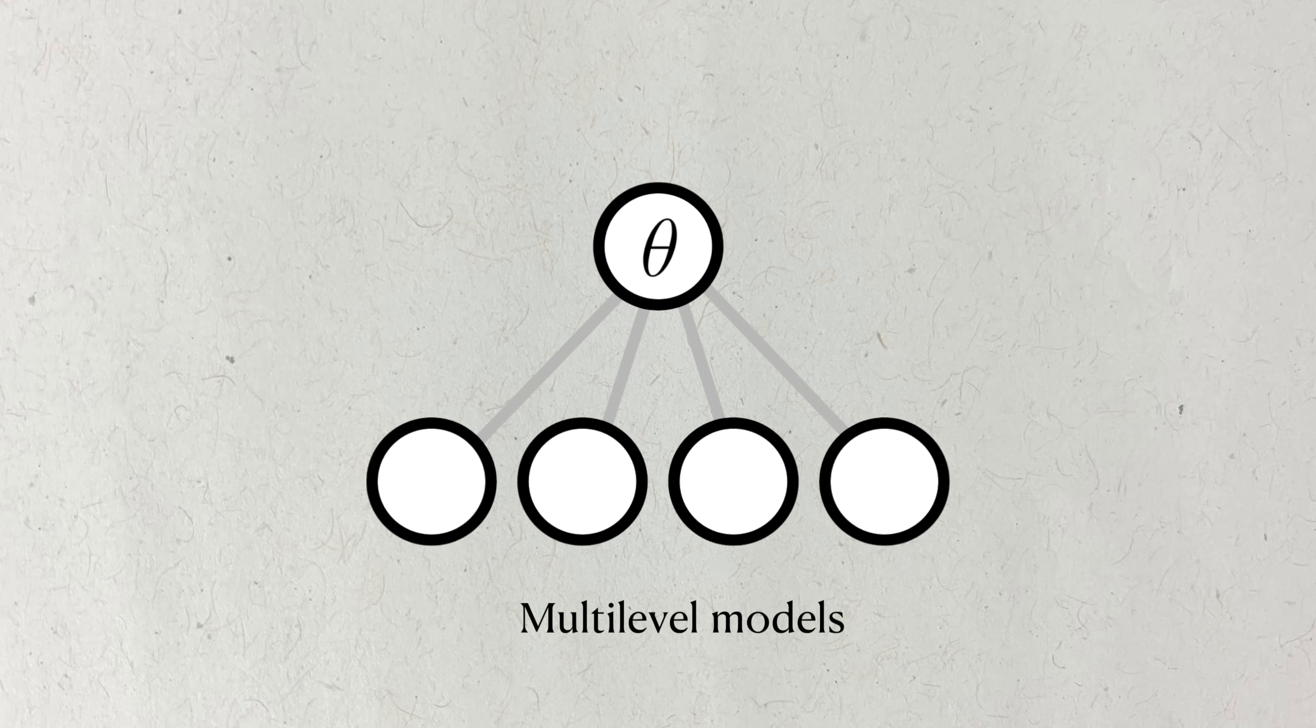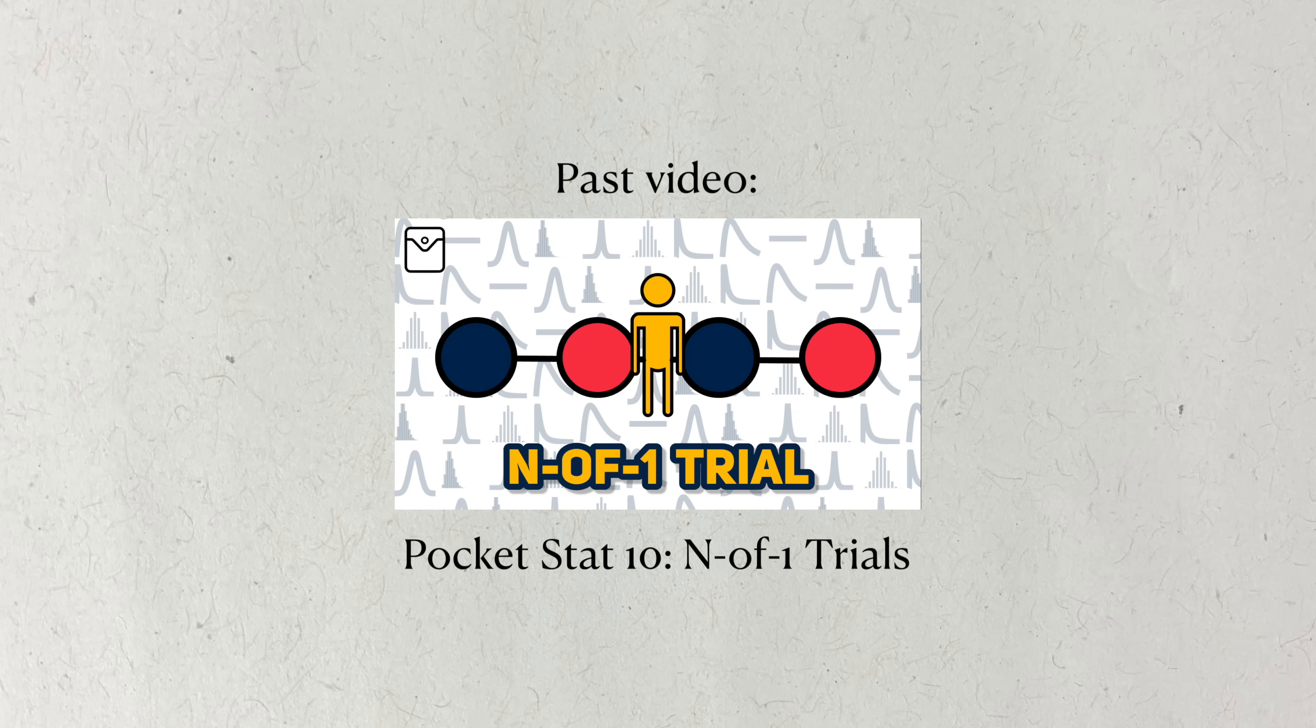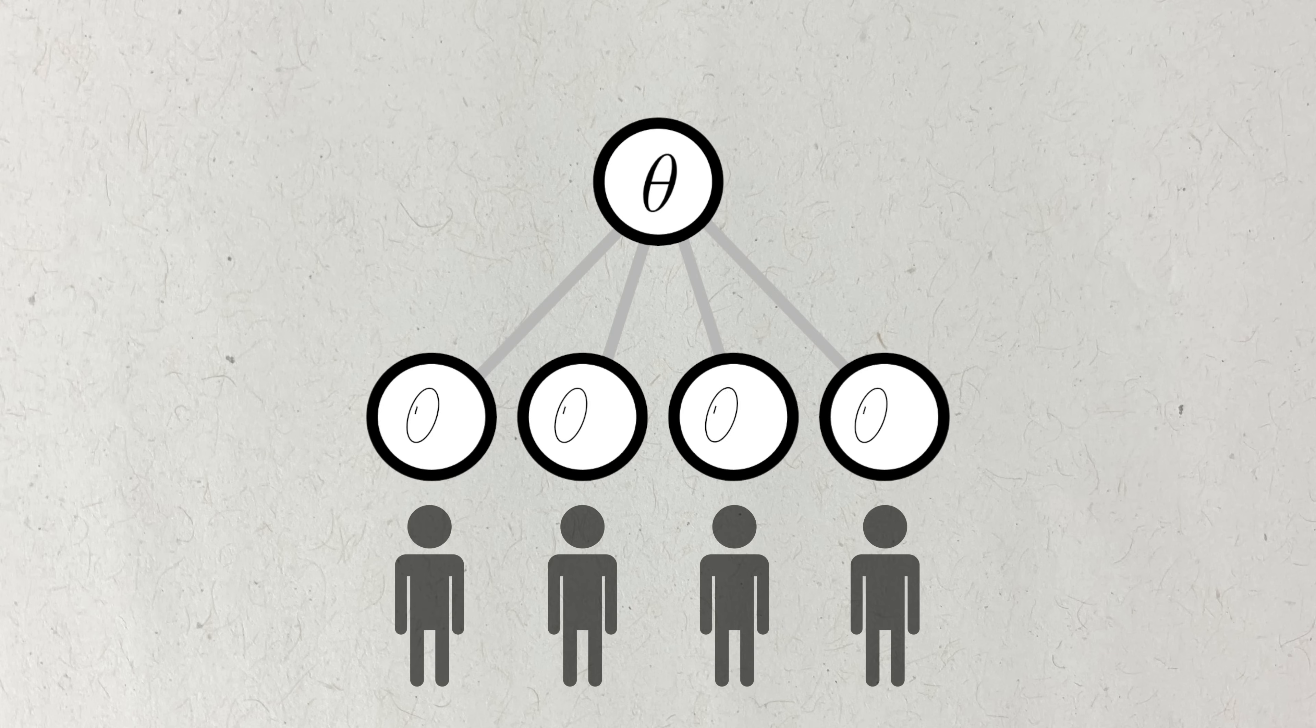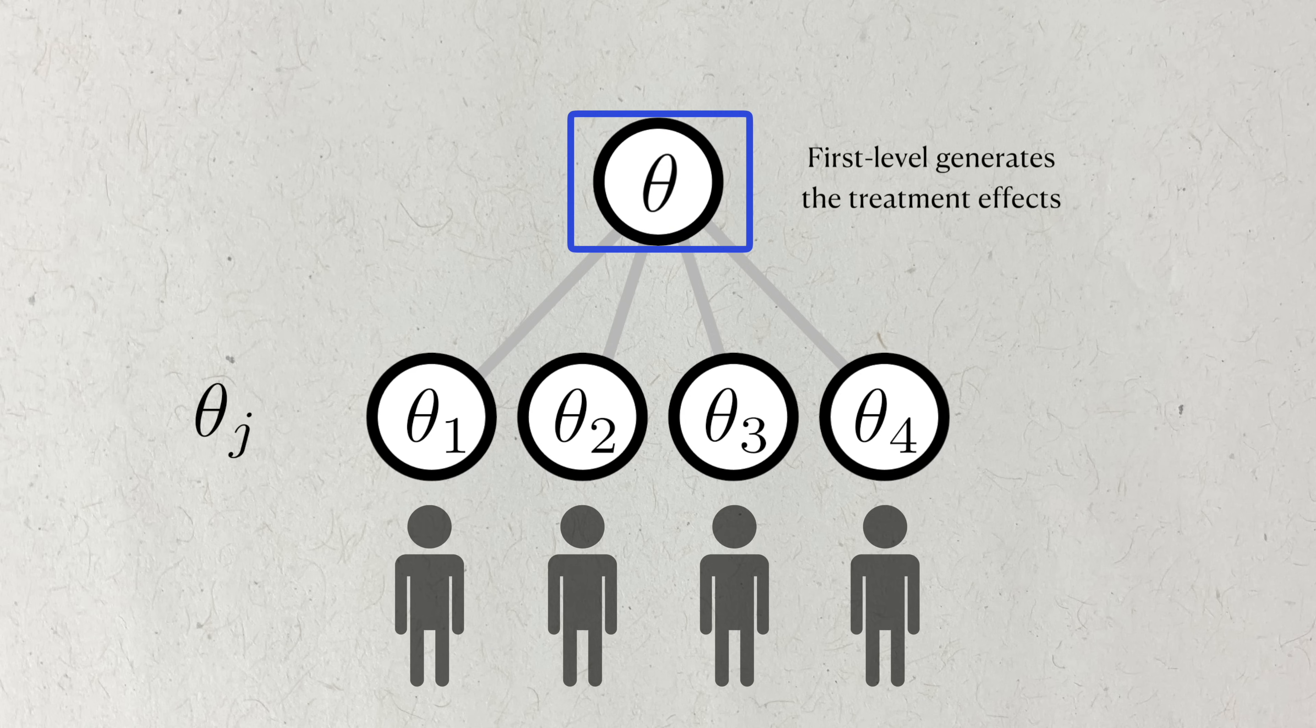Multi-level models, also known as hierarchical or mixed effect models, are models that assume additional structure over the parameters. For example, multi-level models are commonly used to aggregate several n-of-one trials together. Each individual is associated with their own treatment effect, which we'll denote theta j, to indicate that each individual has their own effect. These individuals form the second level of the model. The first level can be thought of as describing the distribution or structure of these individual effects.